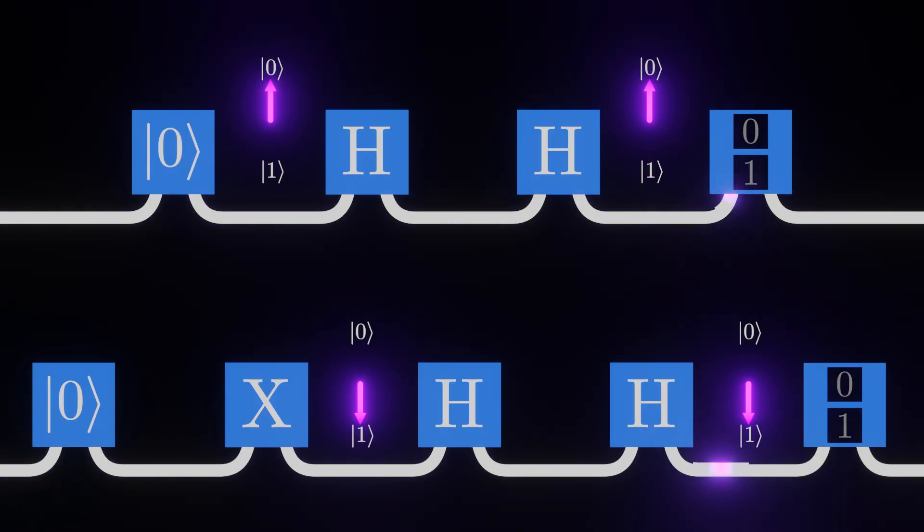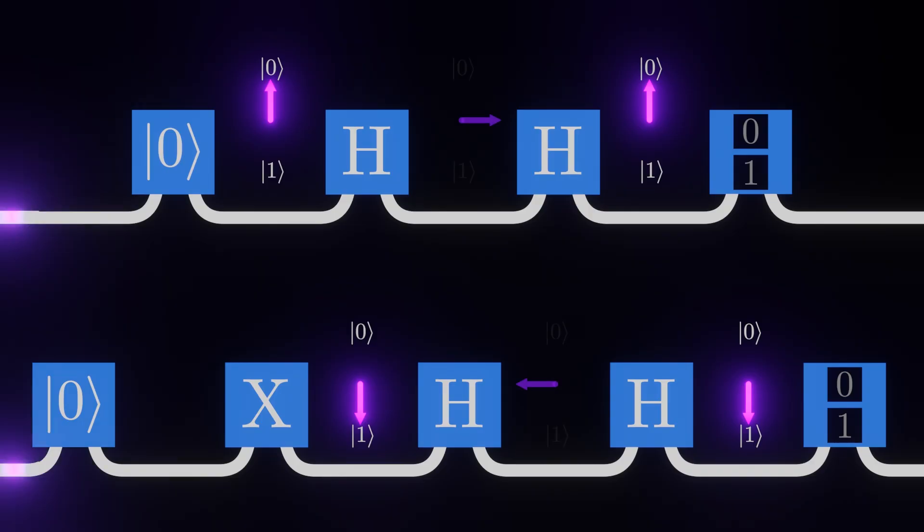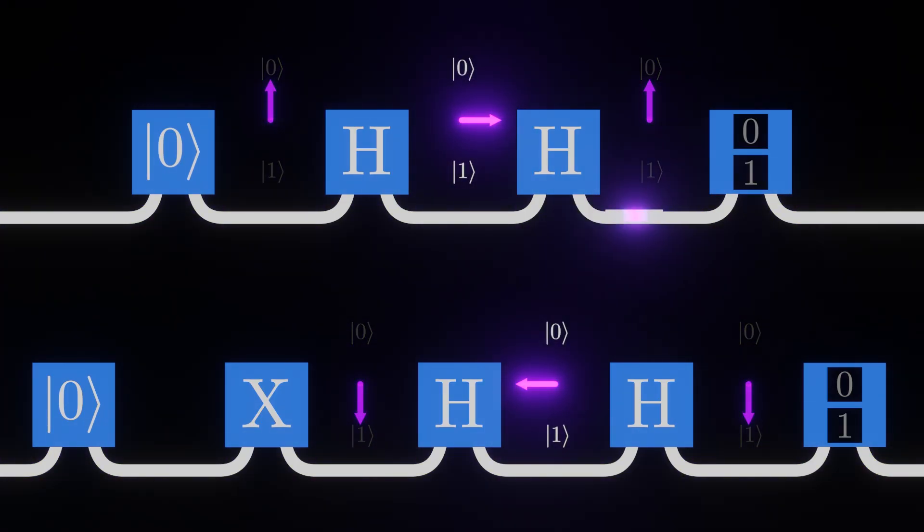What this tells us is that the qubit carries more information than just whether it's 0 or 1. More specifically, it's useful to say that in between the two H gates, the qubit remembers that it's in between the 0 and 1 states.